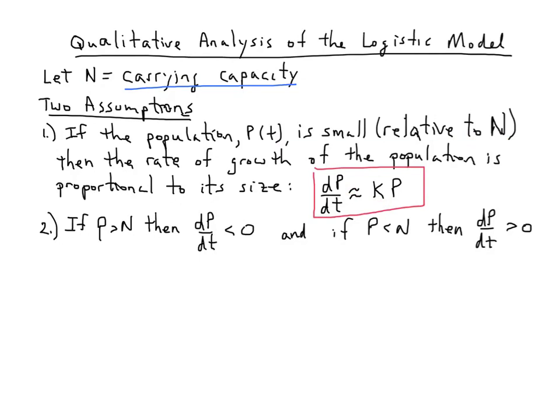The second assumption says that when P is bigger than the carrying capacity, if the population is bigger than what the environment can support, it makes sense that the rate of growth of the population decreases. If it can't support any more than N species, if for some reason we were above it, we'd have to see a decrease in the size of the population. If the population is smaller than the carrying capacity, then we expect to see continued growth. It might not be that fast, but it will continue to grow as long as we're below the carrying capacity.